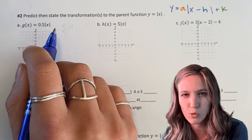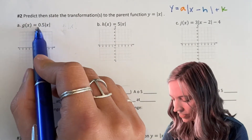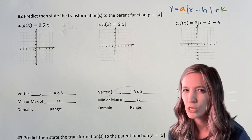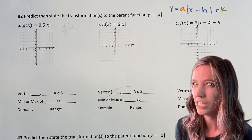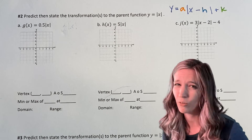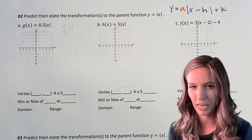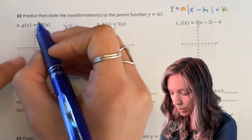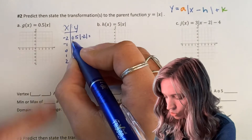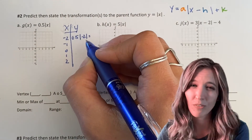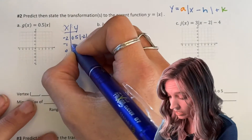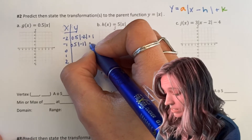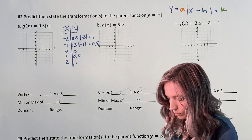Let's continue graphing absolute value functions. Look at this one: 0.5 times the absolute value of x. We know that 0.5 is in the a position, and remember the a value is a vertical stretch or compression. So, is multiplying by a factor of 0.5 going to be a stretch or a compression? Let's make a table of values. With negative 2, negative 1, 0, 1, and 2 plugged in: 0.5 times |−2| gives 1; 0.5 times |−1| gives 0.5.